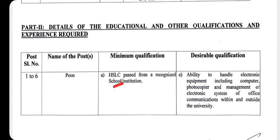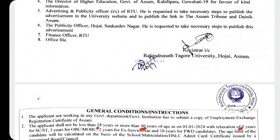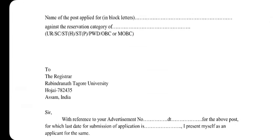Educational qualification for Grade 4: minimum matriculation pass, and those who have passed higher secondary are also eligible. Minimum qualification is matric pass. Candidates should have knowledge of handling electronic equipment, computers, photocopiers, and similar machines. Age limit: minimum 18 years to maximum 40 years. ST/SC: 5 years relaxation; OBC-M/OBC-R: 3 years; ex-servicemen: 2 years; PwBD category: 10 years relaxation.